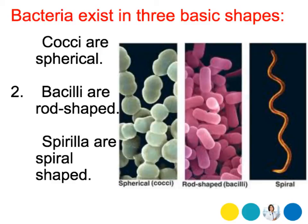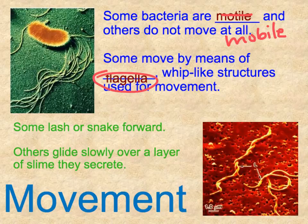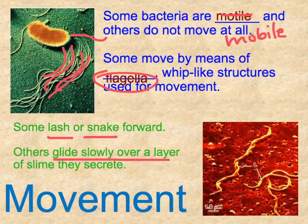There are three basic shapes. Cocci are spherical — a circular shape. Bacilli are rod-shaped, more like rectangles. And spirilla are spiral-shaped. Some bacteria are mobile while others do not move at all. Some move by flagella, a whip-like structure that helps them move. Some lash or snake forward, while others glide slowly over the slime they secrete.